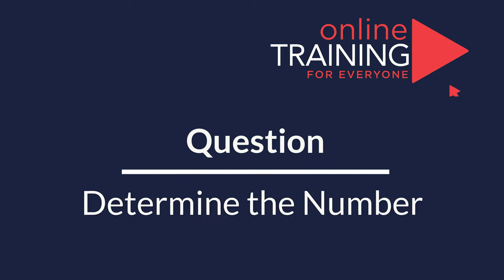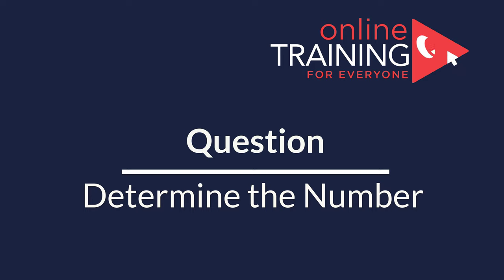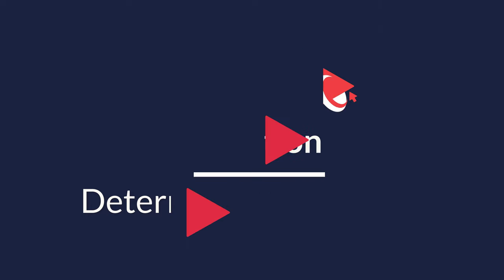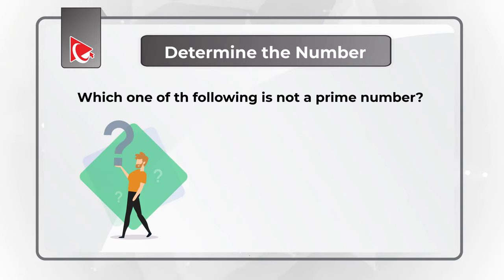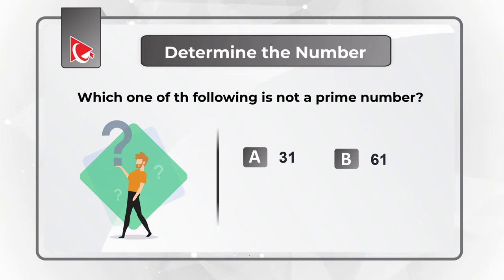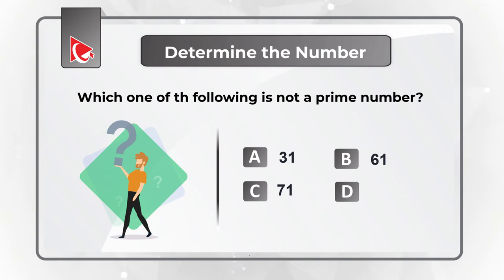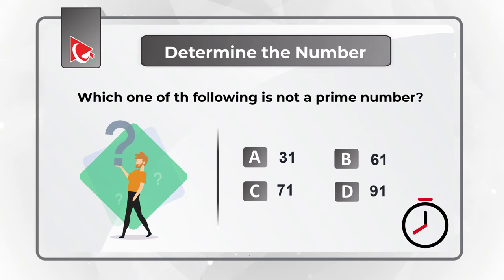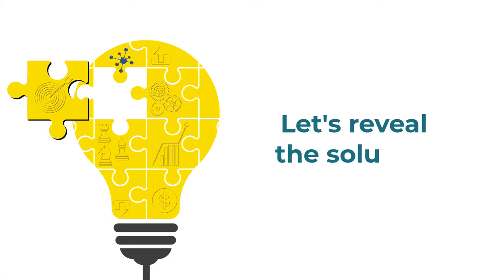Here is an interesting question where you are presented with a set of numbers and you need to determine which number is not a prime number. You have 4 different choices: Choice A, 31; Choice B, 61; Choice C, 71; and Choice D, 91. Give yourself a little bit of time — maybe recall the definition of prime numbers and see if you can come up with the solution.